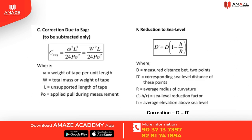The correction due to sag is always subtracted. There are two equations: W is the unit weight per length, and W is the total weight. We also have the reduction to sea level equation, and the corrected length equation. D minus D dash is the correction for reduction to sea level.